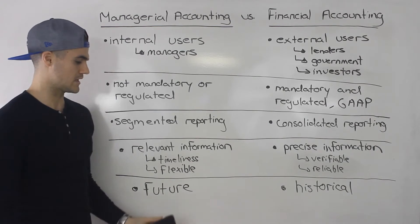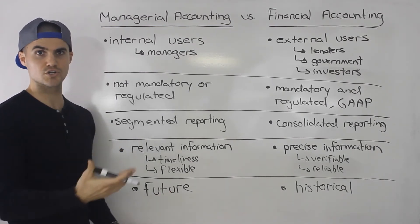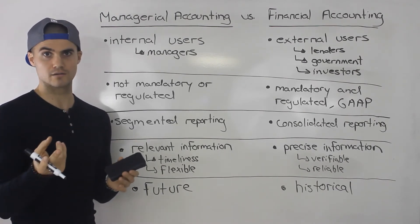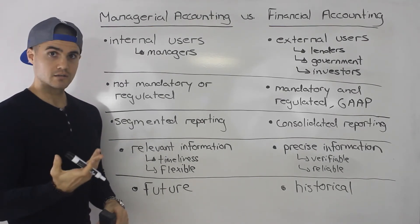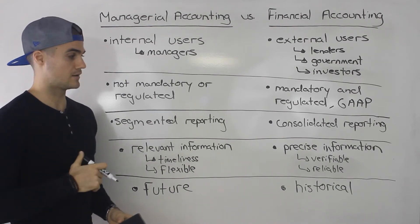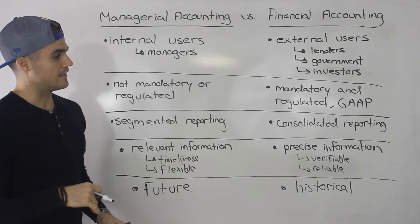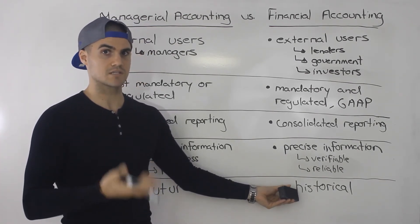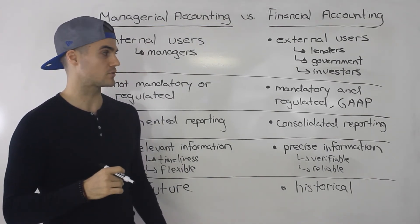The last difference is that managerial accounting is more concerned about the future — about future decisions. For example, should we add a product line to a city, a store, or a region? Budgeting is also a future decision, and you're going to get a lot of budgeting questions in this course. Financial accounting, on the other hand, is based on historical data — the balance sheet, the income statement, and the statement of cash flows are always based on historical data.